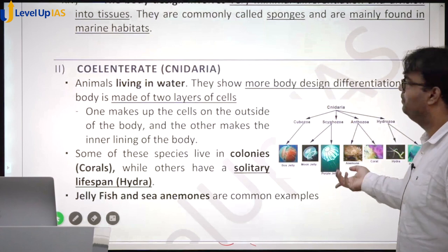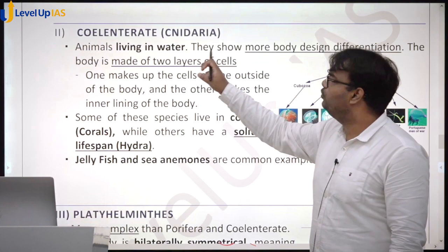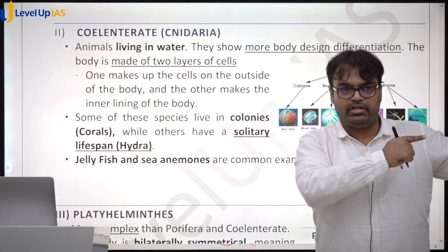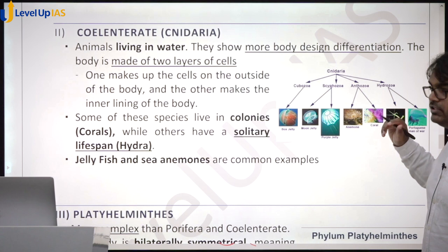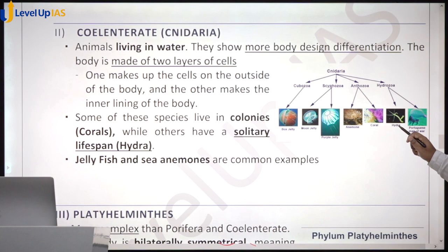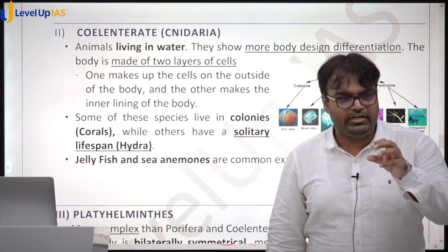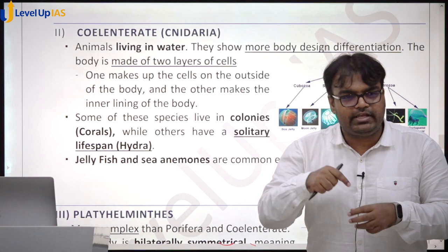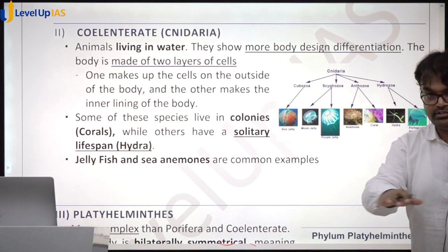Cnidaria live in water and have better body designs than Porifera. They are made up of two layers of cells — one forming the outside of the body, one forming the inner lining. Some live in colonies, for example corals, which are in the Cnidaria group. Some roam individually, like hydra. Jellyfish is also in the Cnidaria category.